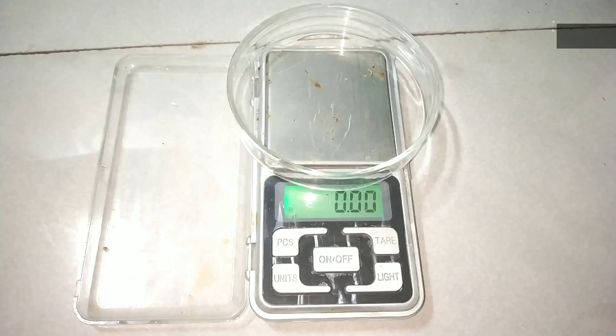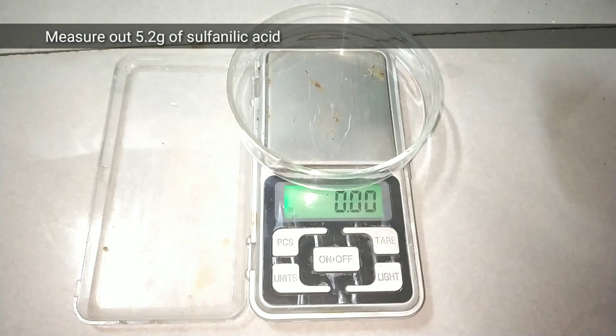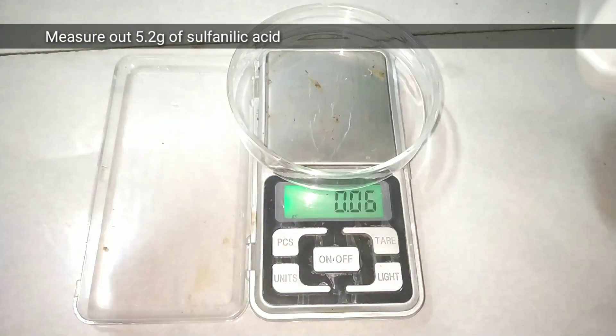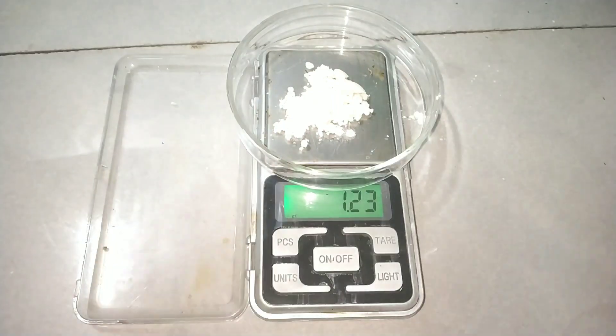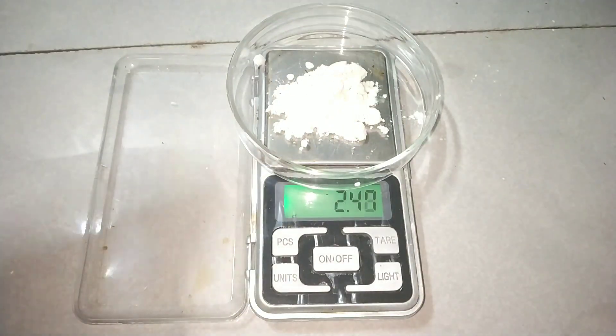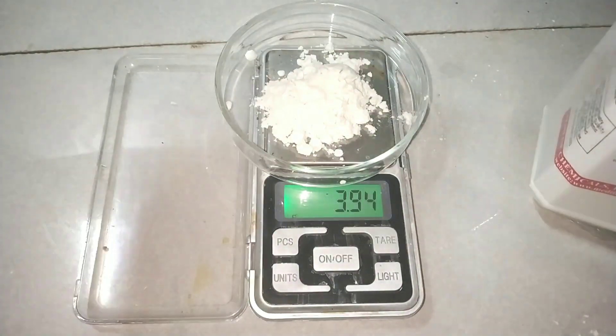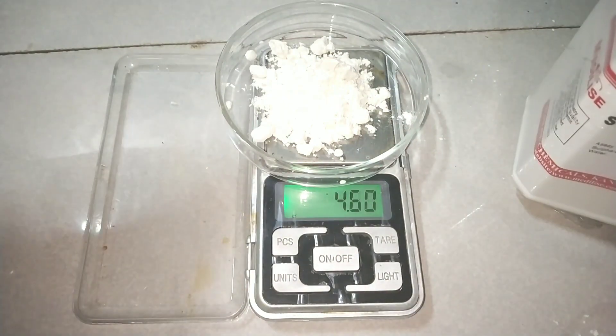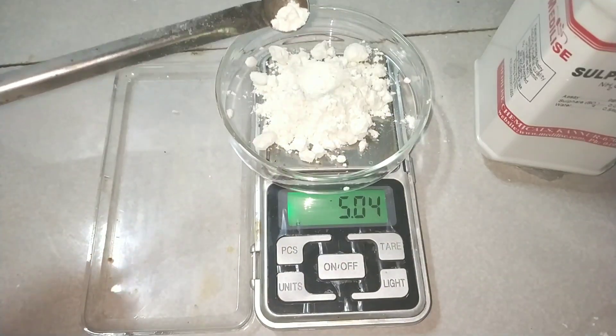The first step is to diazotize sulfanilic acid, and for that I have measured out 5.2 grams of sulfanilic acid. Sulfanilic acid, as you can see, is an off-white colored fluffy powder and it is readily soluble in water.